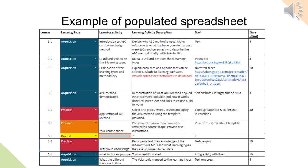How do you go about using these six learning types? There are different ways the ABC method can be used. We suggest that a spreadsheet document be used — you can make use of our template that can be downloaded, or alternatively set up a Word or Google document. In this example, each activity has its own row. In the column titled 'lesson', numbers are used to order the learning activities, helping to show how content flows. In the column titled 'lesson type', the type of learning is categorized using specific colors, which helps in seeing which learning types are more present.